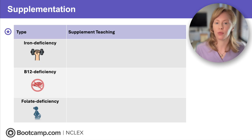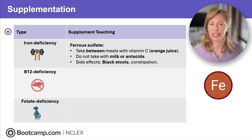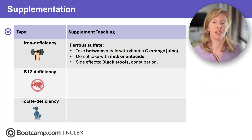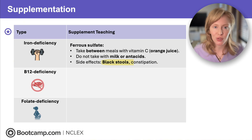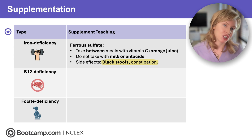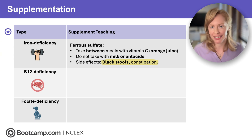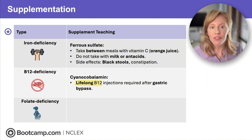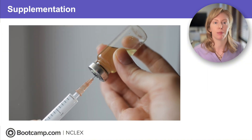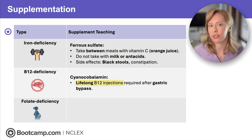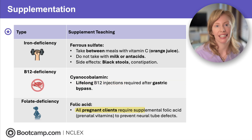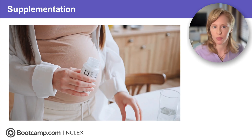If they can't get enough from dietary sources, they may need supplementation. Iron deficiency is treated with ferrous sulfate, but it's hard for the body to absorb, so teach them to take it between meals with vitamin C like orange juice — not with milk or antacids, which impair iron absorption — and warn them about black stools and constipation. Black stools would be a warning sign for a GI bleed in a different client, but in patients taking iron it's expected. B12 deficiency is treated with cyanocobalamin, and lifelong B12 injections are required after gastric bypass because they can't produce intrinsic factor. To prevent folate deficiency, all pregnant clients need to supplement folic acid in their prenatal vitamins to prevent neural tube defects.